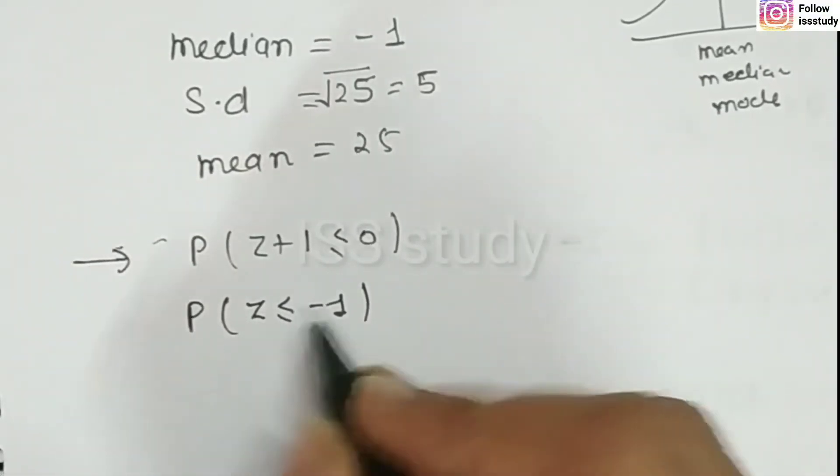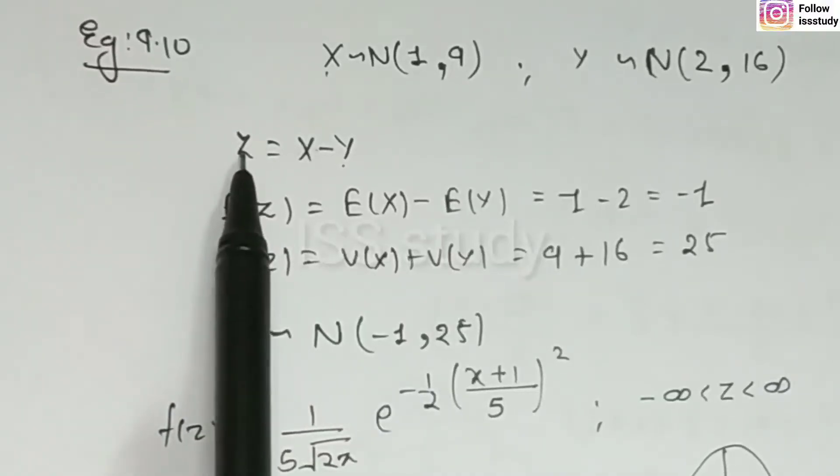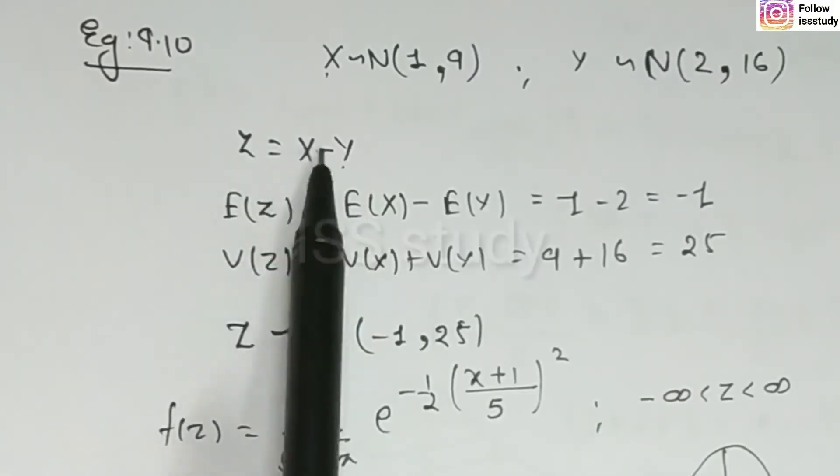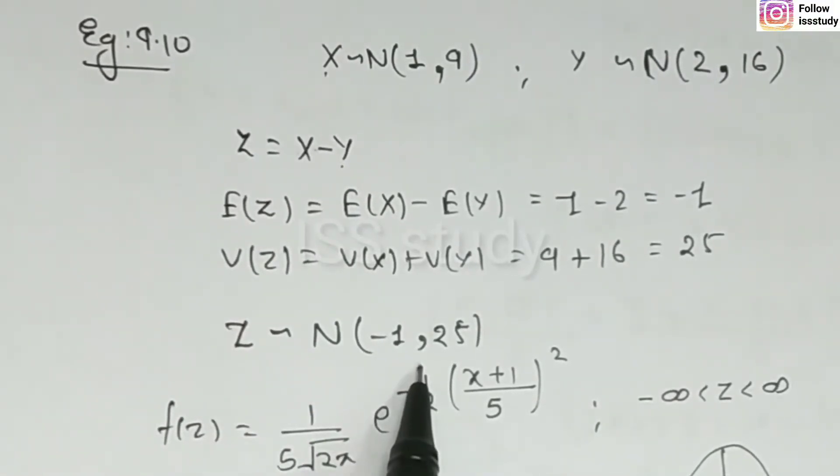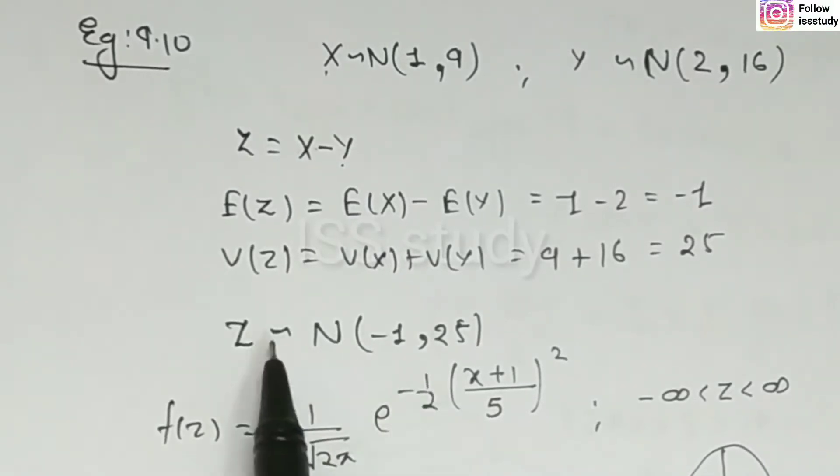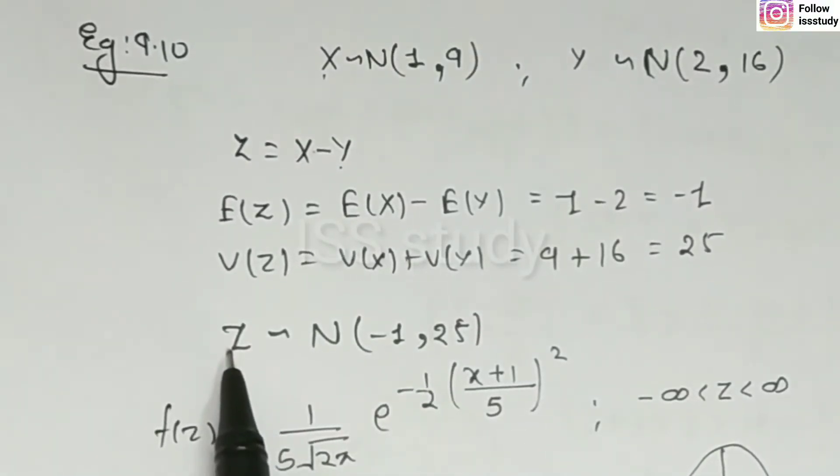Now, you have to find z. Don't consider standard normal variance. Why? Because z represents x minus y. We can represent z. And, what do we find? It's a normal distribution. It's a normal distribution. It's a standard normal distribution. So, now, we have to convert to the standard normal distribution.